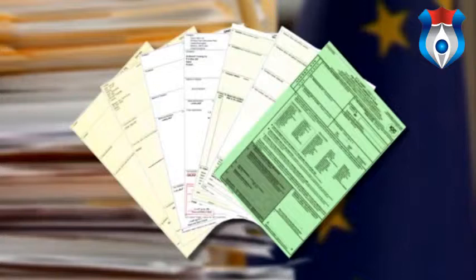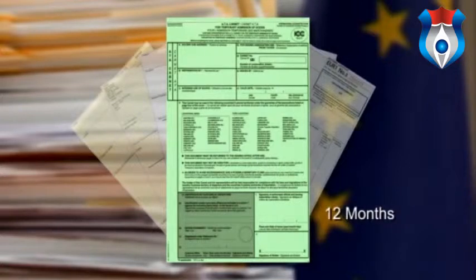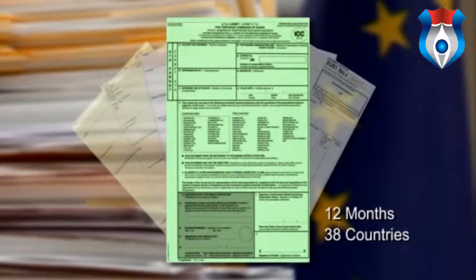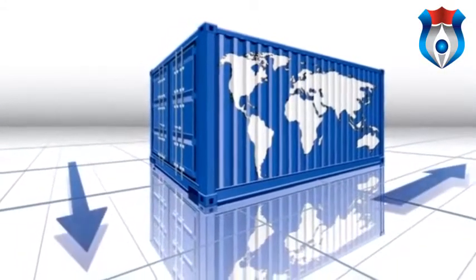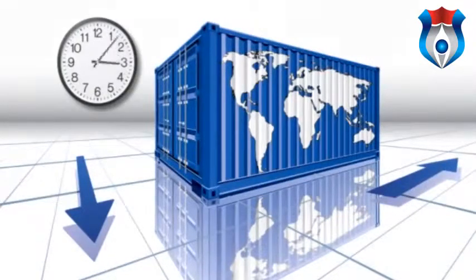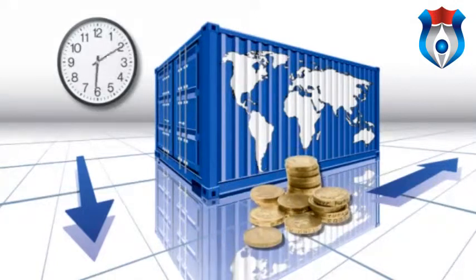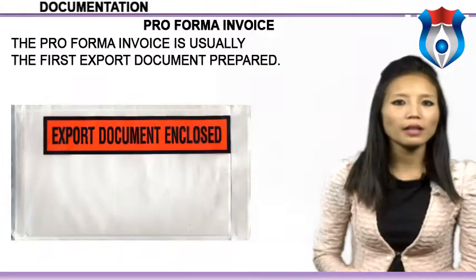If you are taking goods and samples for display at exhibitions, or need to transport specialised tools and equipment to complete specific work overseas, then you will need an ATA carnet. These facilitate the temporary export of goods for up to 12 months, acting as a passport when presented at each customs post. They are recognised in 38 countries worldwide and enable goods to be temporarily imported into a country without the need to pay duties. The requirements and procedures involved when trading internationally can often be complex and time-consuming, and if done incorrectly, the repercussions can be high and costly.